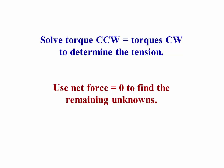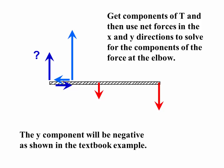We can then use net force equals zero to find the remaining unknowns. We first turn the tension from an angled force into one that has vertical and horizontal components. And then we can use the net y forces equals zero and the net x forces equals zero to solve for the unknown force components at the elbow. When we do this, the y component will be negative as shown in the textbook example. The reason that force, the y component, has to be negative is in order for the torques to net out properly if I take the axis at the place where the muscle force acts. That's one of the details that I explain in class.